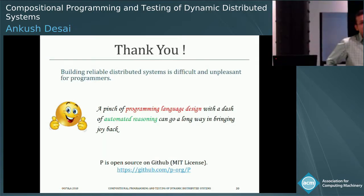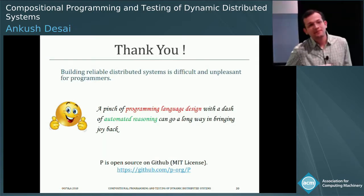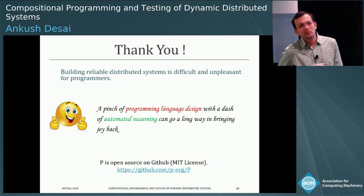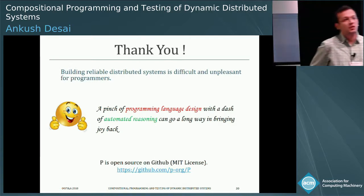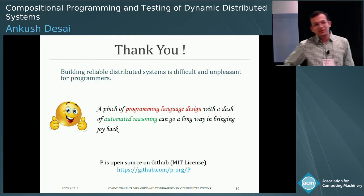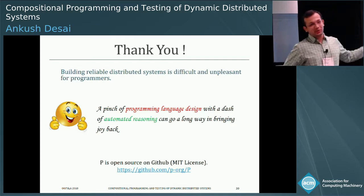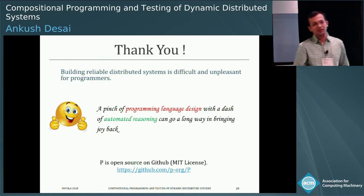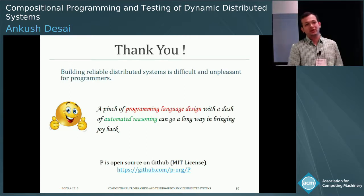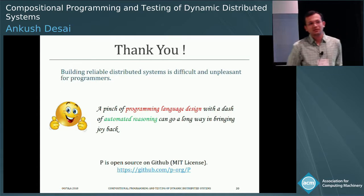Q&A: One questioner asked about automatically incorporating replication into the framework rather than implementing it explicitly for each actor. The response was that replication can be written using P — the entire multi-Paxos protocol was implemented this way — and there are ongoing efforts to create a library providing automatic replication for actors, but that was not the focus of this work.